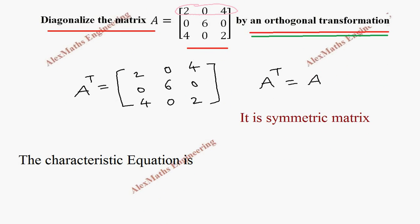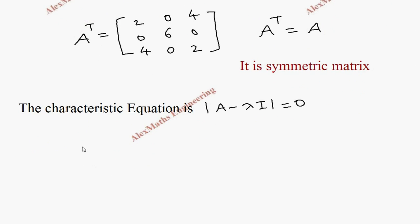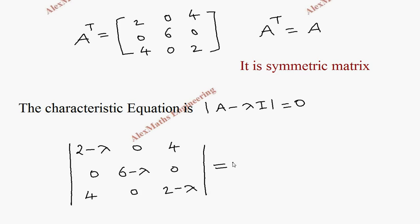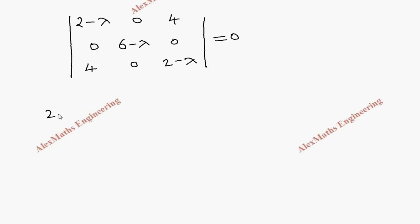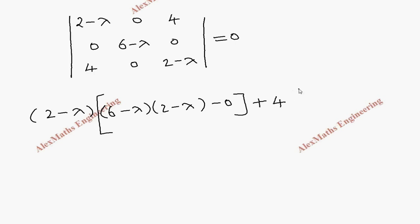Now we have to write the characteristic equation, which is the determinant of A minus lambda I equal to 0. We get the determinant whose elements are 2 minus lambda, 0, 4 in the first row; 0, 6 minus lambda, 0 in the second row; and 4, 0, 2 minus lambda in the third row, all equal to 0. Expanding this determinant: 2 minus lambda into (6 minus lambda)(2 minus lambda) minus 0, plus 0, plus 4 into (0 minus 4(6 minus lambda)) equal to 0.